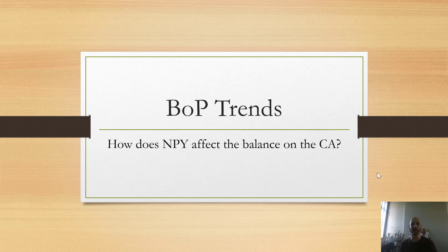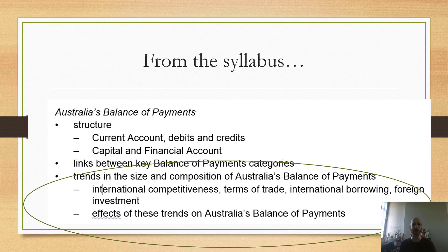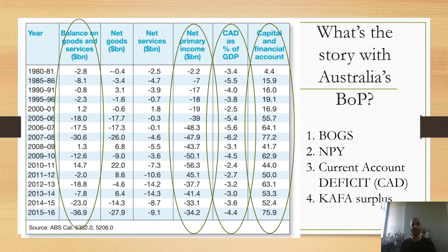In today's video we're going to be continuing looking at balance of payments trends. In particular, we're looking at how net primary income affects the balance on the current account. In terms of the syllabus, we're still on this third dot point. In our discussion of BOGS, we had a look at Australia's balance of payments — BOGS being mostly negative, net primary income being mostly negative, our situation of having a current account deficit, and a capital and financial account surplus. We're focusing here on how NPY, net primary income, will create a current account deficit.